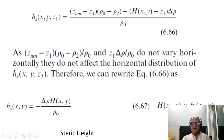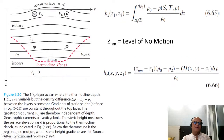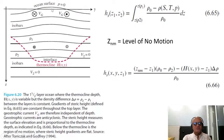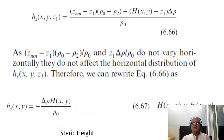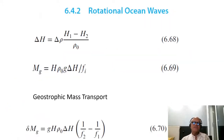H(X,Y) is obviously much much greater than the steric height. That means the variations in the thermocline depth are 100 times larger than the variations in the steric height — you move the thermocline by 100 meters to move the sea surface by 1 meter. That's the kind of scale we have, and it allows us to derive rotational waves.